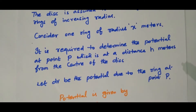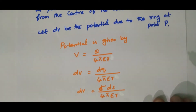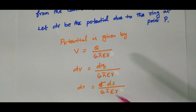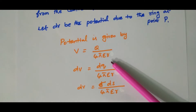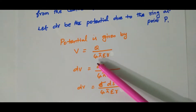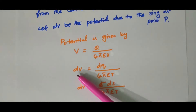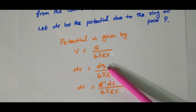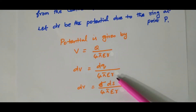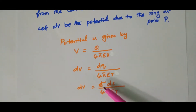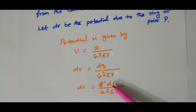The potential is given by V equal to q divided by 4 pi epsilon r. This is the general formula for potential. Since we consider only a small charge, V becomes dV, so dV equals dq divided by 4 pi epsilon r. Since dq equals sigma times ds, we get dV equal to sigma ds divided by 4 pi epsilon r.